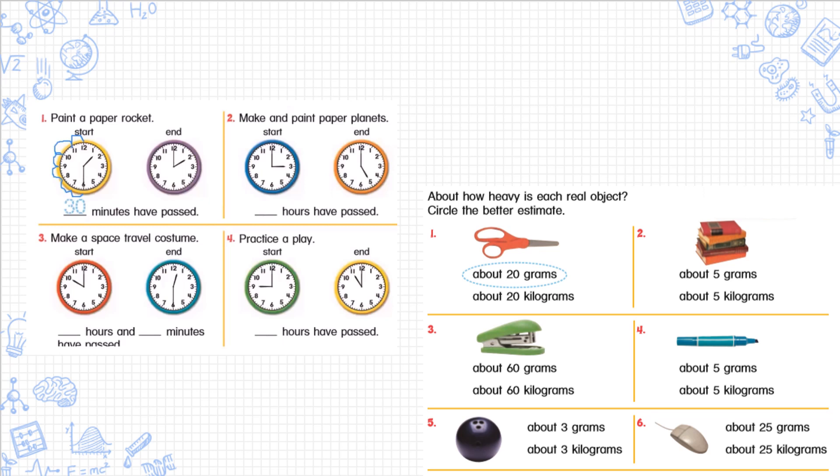If I look at number two, it asks how many minutes to make and paint paper planet. How long did that take me? So let's look at the start time. I start at o'clock and it is three o'clock. I end it at five o'clock. So my minutes did not change, only the hours changed. So this time I am going to count in hours. Let's see how many hours it took me. If I start at three and I end it at five, I'm going to count in ones because I'm counting the hours: one, two. It took me two hours to do this activity. Go and try number three and four by yourself.